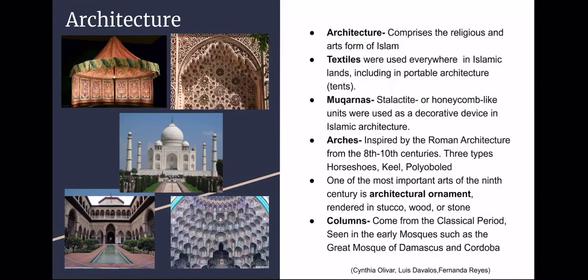Architecture is very important in Islam because it encompasses the religious and art forms of the nation. Columns were very important in representing Islamic art and its meaning. They began during the Classical period and can be seen in early empires such as the Great Mosque of Damascus and Córdoba.